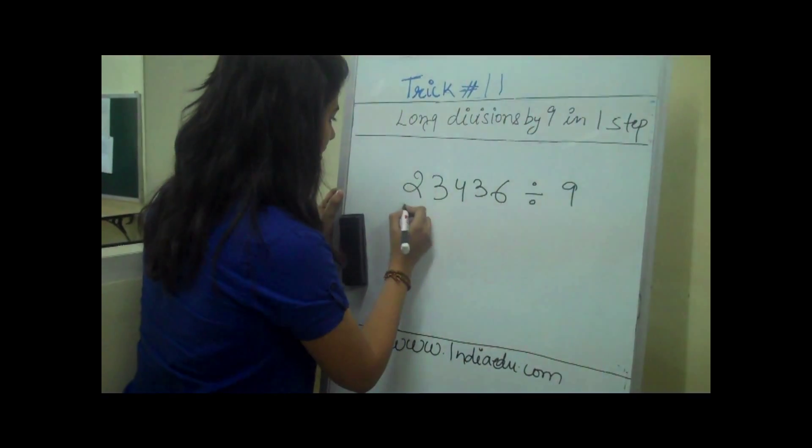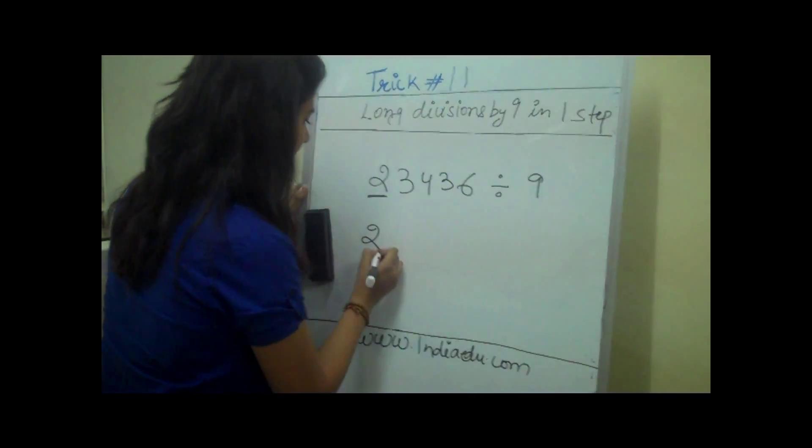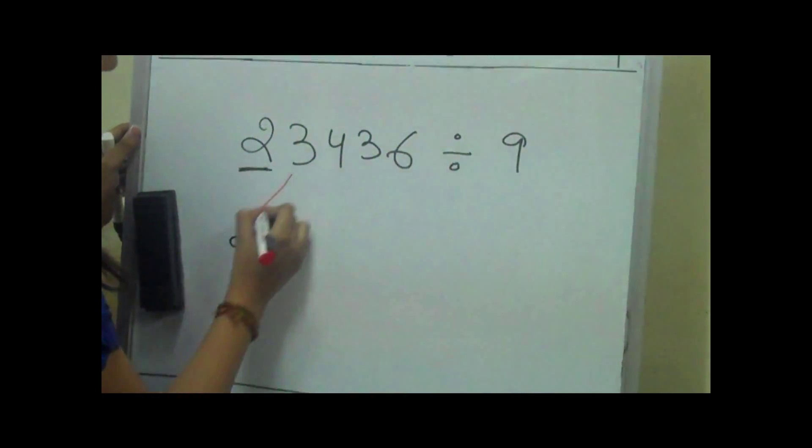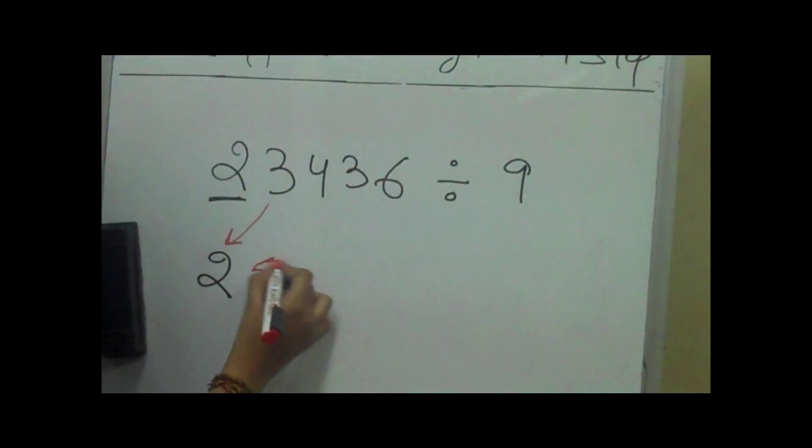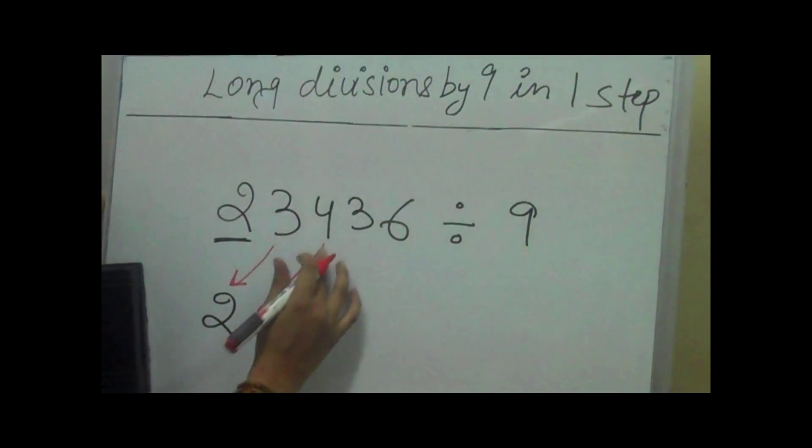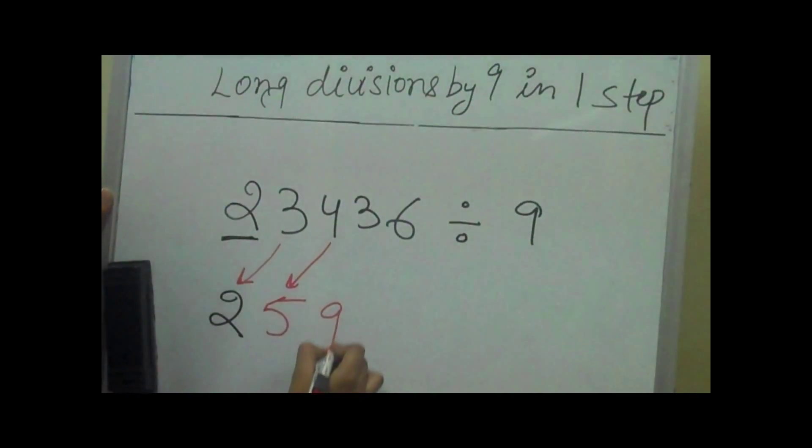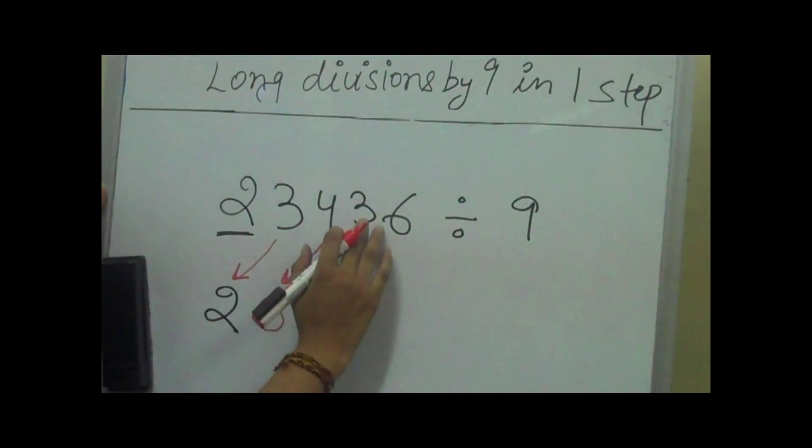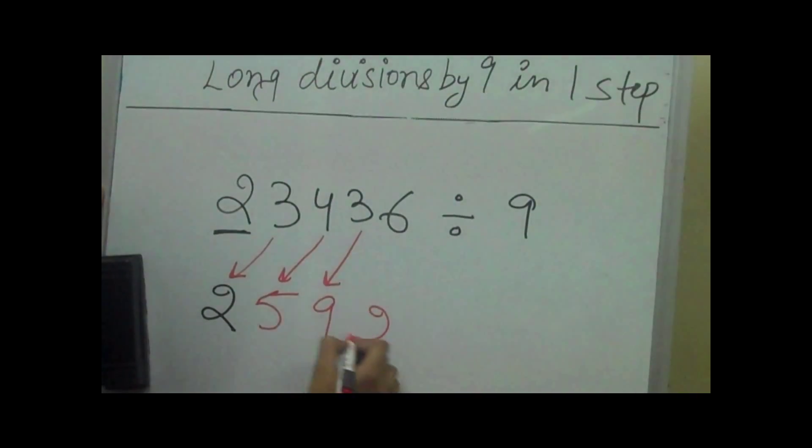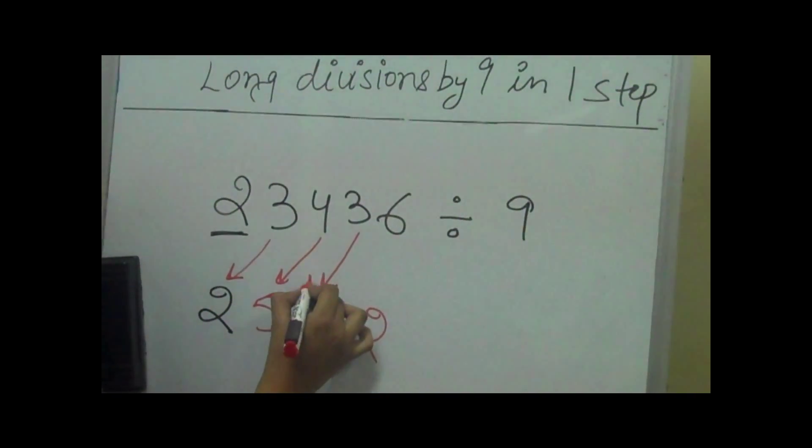First we copy the first number as it is. Then we add this number to this number which makes 5. Then we add this number to this number which makes 9. We add this number, and 9 plus 3 is 12, with 2 and 1 as carry over.